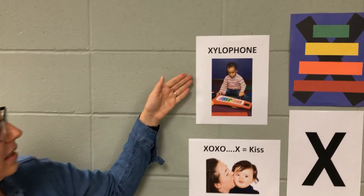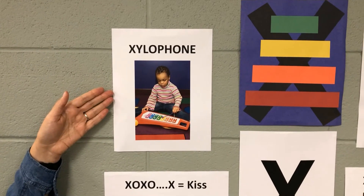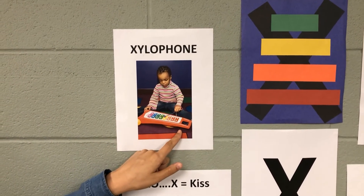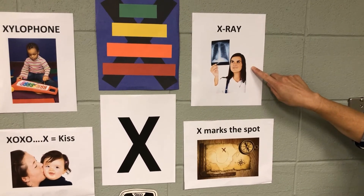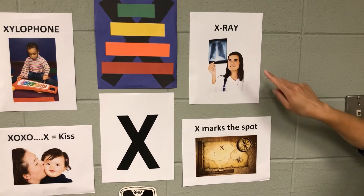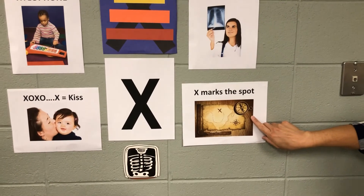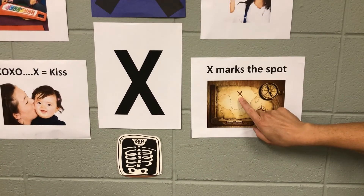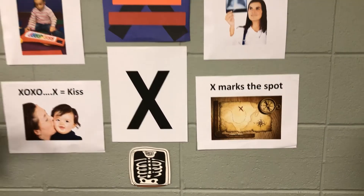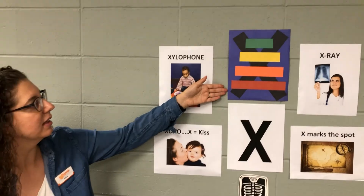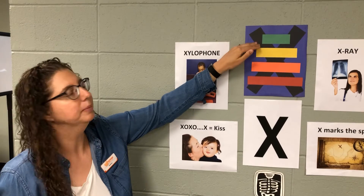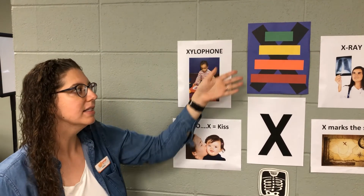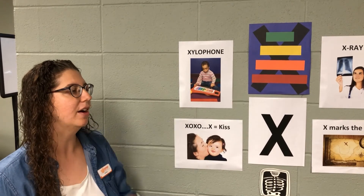This is a picture of a little girl playing a xylophone — maybe some of you have played a xylophone before. Over on the other side, we have a picture of a doctor looking at an X-ray, a real picture of someone's chest. Below, we have a map — sometimes on a treasure map there's an X because X marks the spot where the treasure might be. And up here we have a craft we did at the library where we made an X and put some bars on it — maybe it looks kind of like a xylophone. So that is for the letter X.